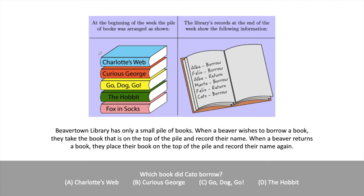We are looking for which book Cato borrowed, and there are two ways to solve this. We can go from the top of the list to the bottom, or from the bottom to the top. First, we see that Alba borrowed a book. Being the first person to borrow, with the stack still full with all five books, she would borrow the book on top — Charlotte's Web. Now Alba has Charlotte's Web, so it's no longer in the stack.